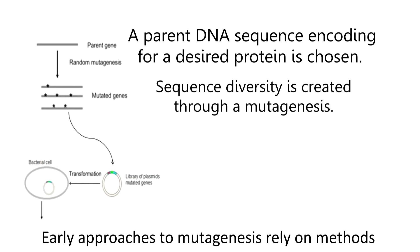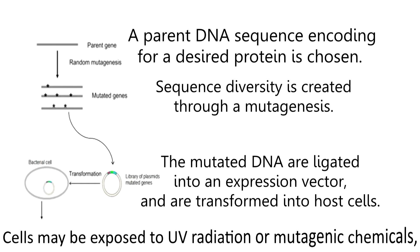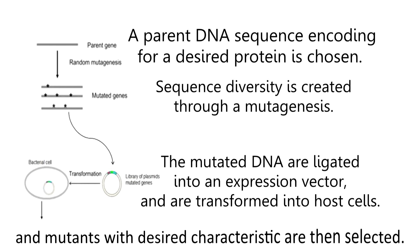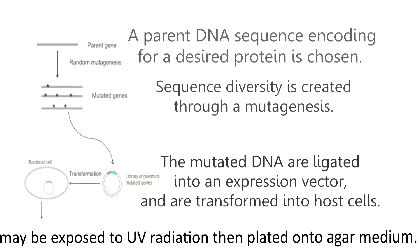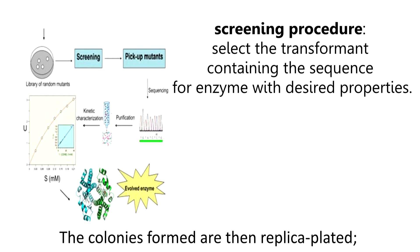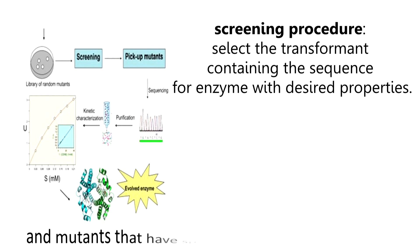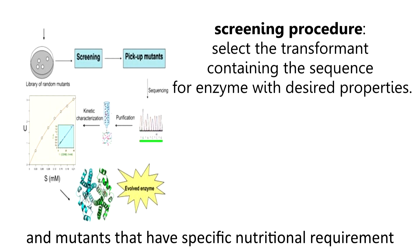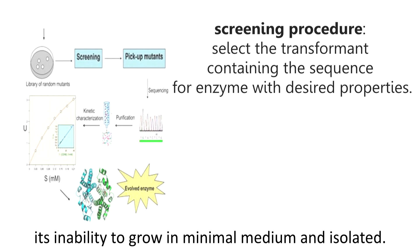Early approaches to mutagenesis rely on methods which are entirely random in the mutations produced. Cells may be exposed to UV radiation or mutagenic chemicals, and mutants with desired characteristics are then selected. For example, Escherichia coli may be exposed to UV radiation then plated onto agar medium. The colonies formed are then replica plated — one in rich medium, another in minimal medium — and mutants that have specific nutritional requirements can then be identified by their inability to grow in minimal medium and isolated.